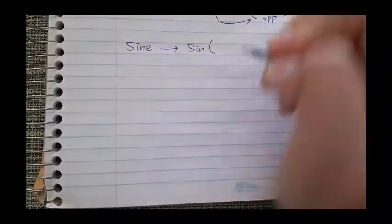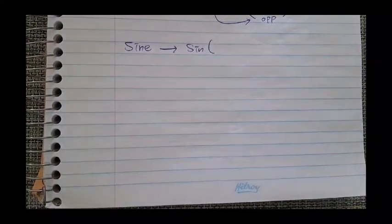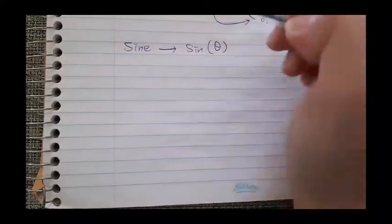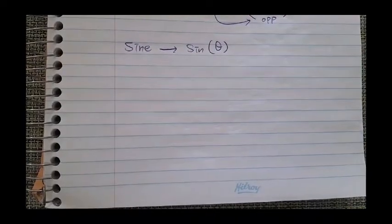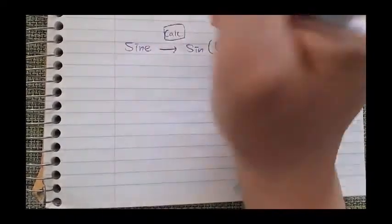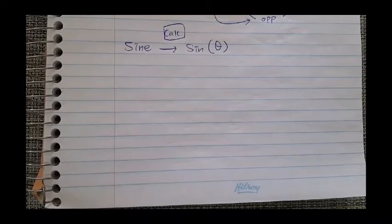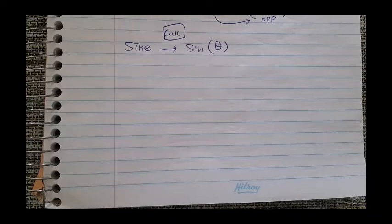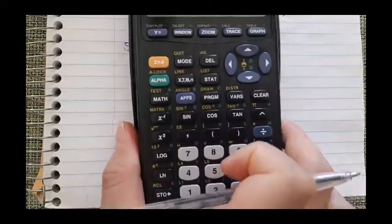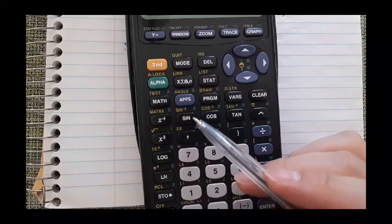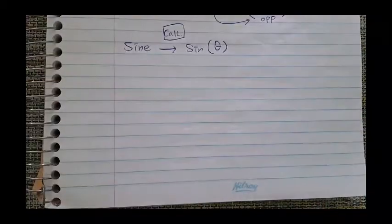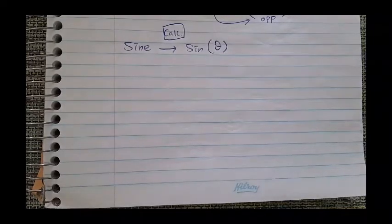Now let's talk about sine ratio. Sine, in the calculator, looks like this — and what goes inside is your angle. From now on, the calculator is really important. Whenever you use sine, it's spelled S-I-N-E, but in the calculator it shows as SIN. Even if you're using a scientific calculator rather than a graphing calculator, you should have sine, cosine, and tangent buttons — just look at your buttons.